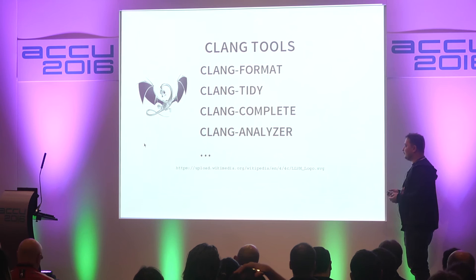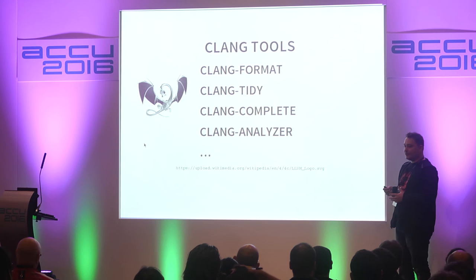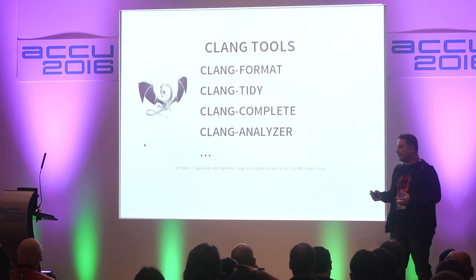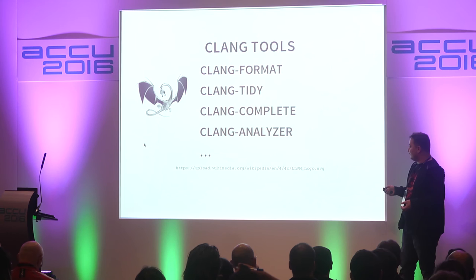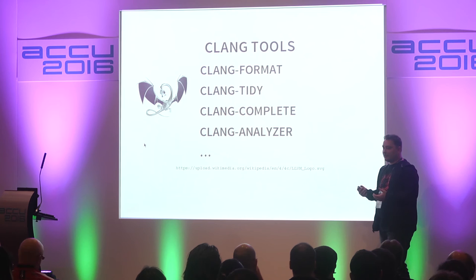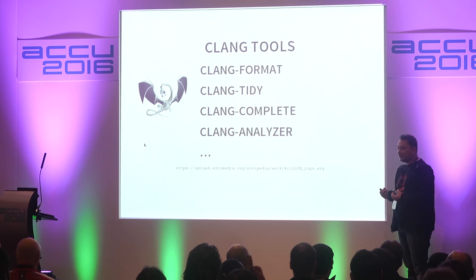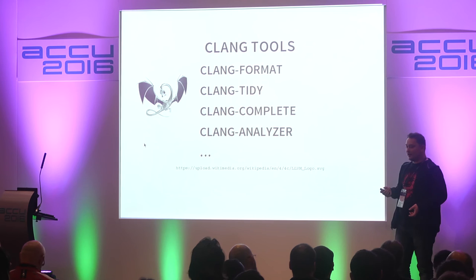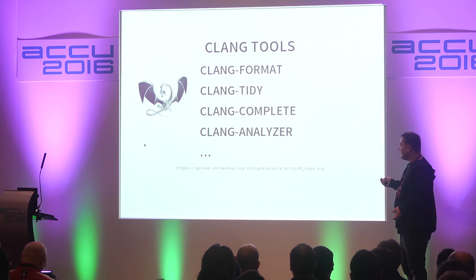Modern compilers also ship with tools that help us do other things, like clang-format to reformat the code, clang-tidy which is a C++ linter, clang-complete which can be used by IDEs to provide suggestions to the user, and clang-analyzer which is a static analysis tool. The common part of all these tools is that they are not parsing C++ themselves — they are using the compiler as a library. So these tools get all information about the code with 100% accuracy, even if we use Boost MPL.